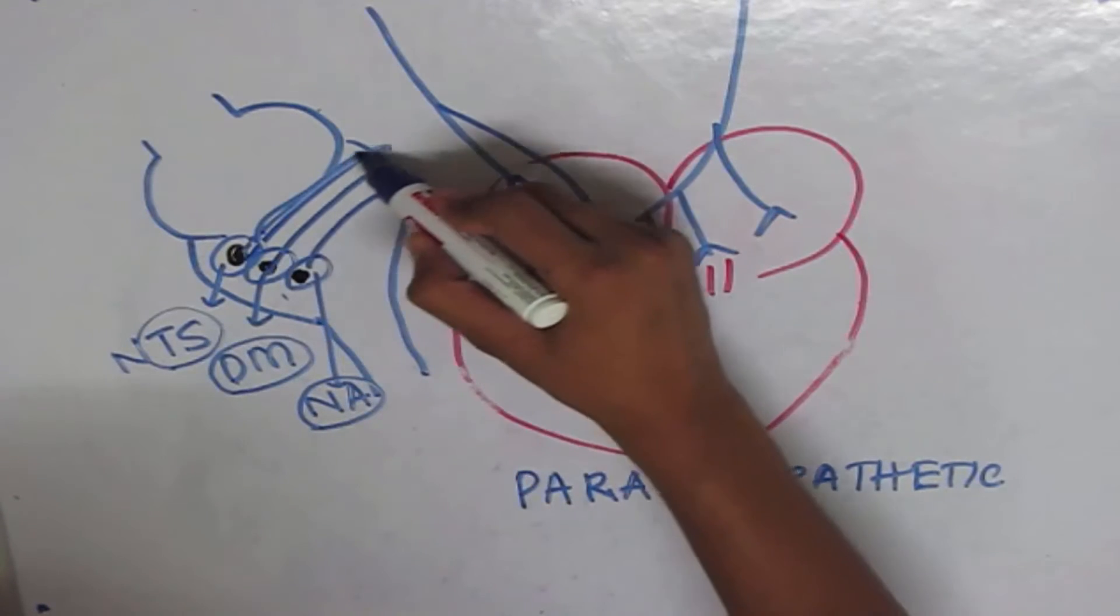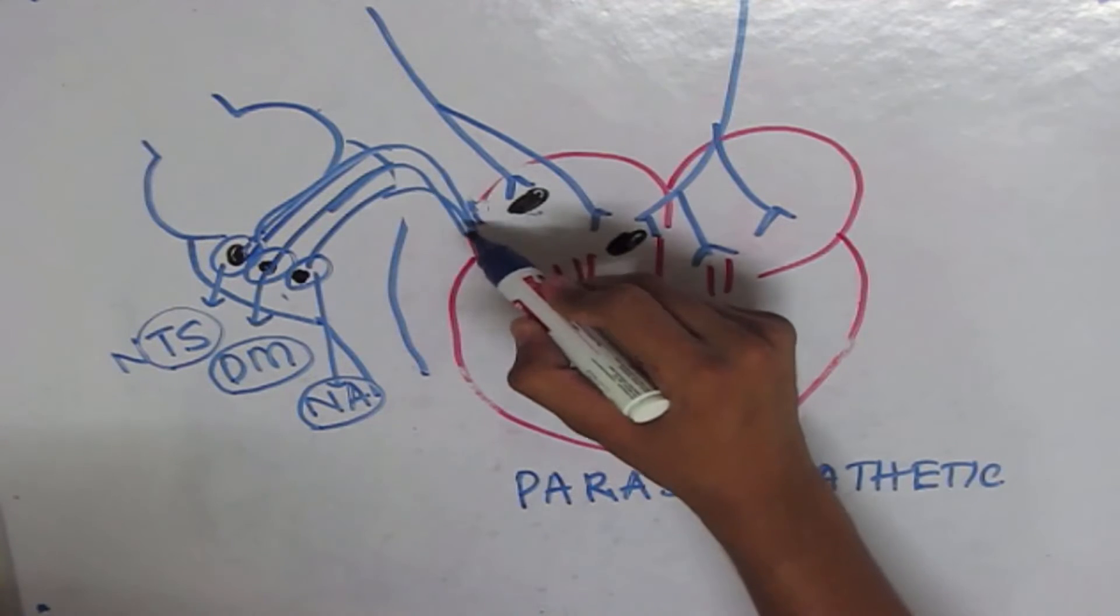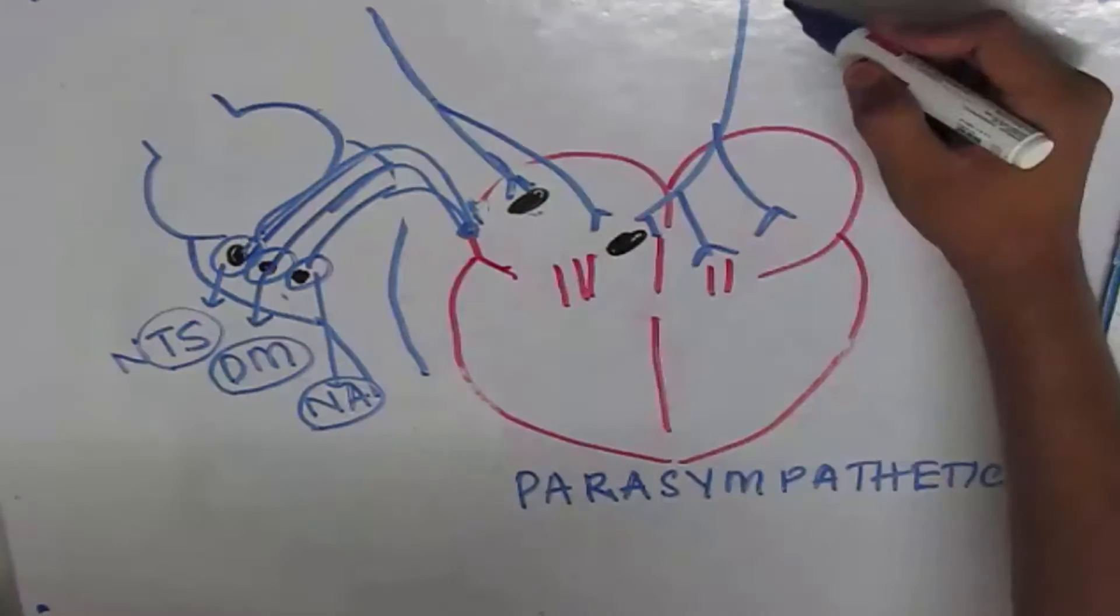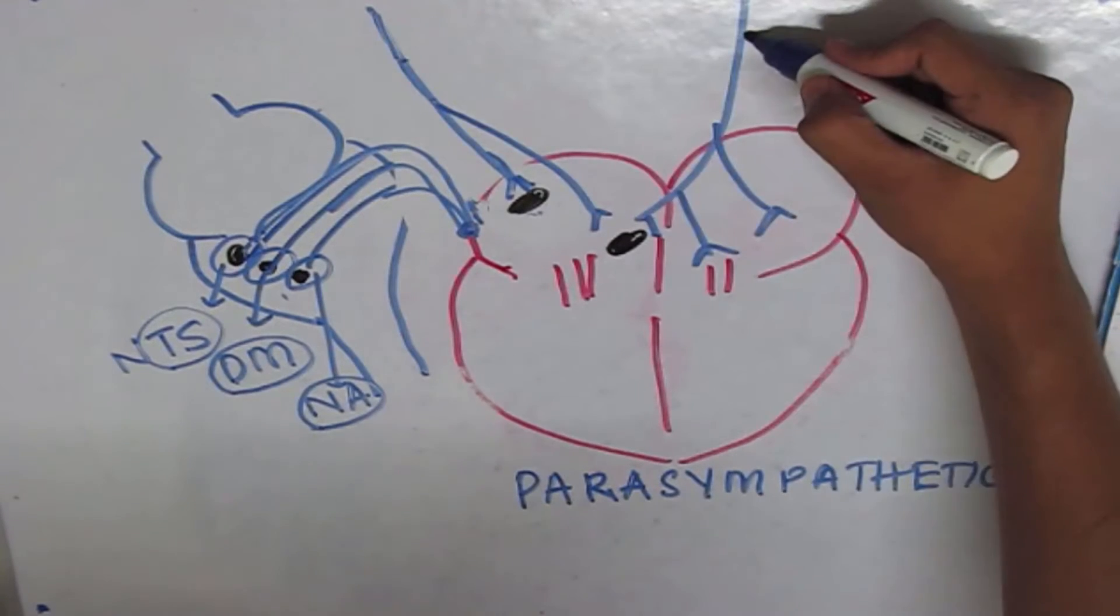From there, the preganglionic fibers arrive through the vagus and the ganglion is present inside the heart itself. From there, it gets divided into two parts, the right vagus and the left vagus.